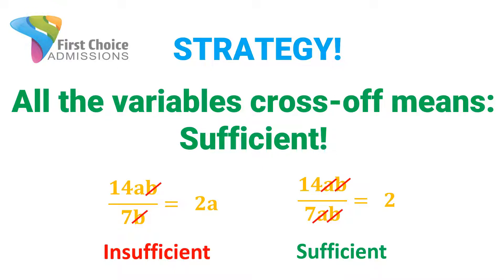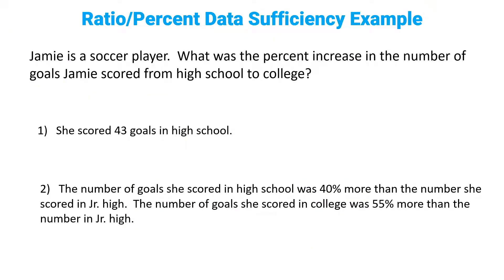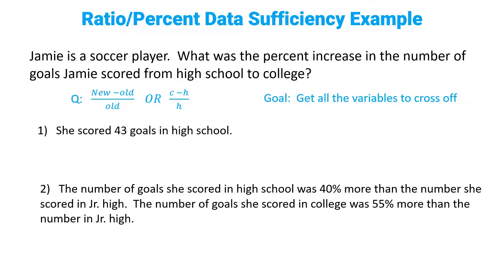Let's take a look at an example. Jamie is a soccer player. What was the percent increase in the number of goals Jamie scored from high school to college? The first step is to pick out what we've been asked and write it down. We're asked for a percent increase, which is new minus old over old — in this case, college minus high school over high school, or C minus H over H. Our goal is to get all the variables to cross off. So we translate each statement out of English into math, plug it into our ratio, and see if it's enough to get all the variables to cancel.